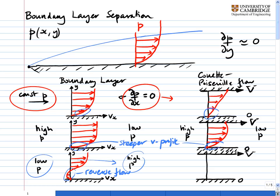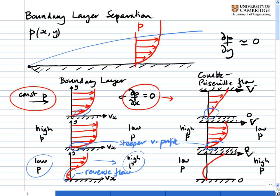Then we looked at Couette-Poiseuille flow with an adverse pressure gradient — low pressure upstream and high pressure downstream. Here, by the no-slip condition, we have zero velocity at the bottom and velocity v at the top, but now we have a parabola going the other direction. Drawing in the velocity vectors, we have at the bottom a little region of reverse flow, and that's exactly the same as we have in the boundary layer. So we've seen this concept before.